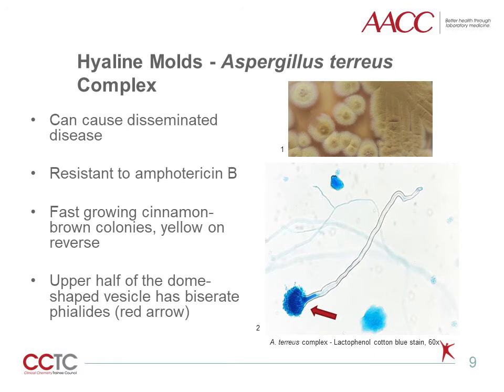Aspergillus terreus, also part of a complex, can cause disseminated disease in immunocompromised patients and is intrinsically resistant to amphotericin B. The colonies are fast-growing, cinnamon brown, and yellow on reverse. Microscopically, the upper half of the dome-shaped vesicle has biseriate phialides, as pointed out by the arrow.